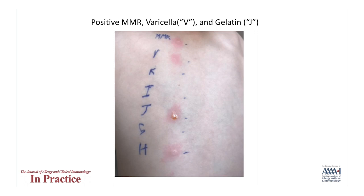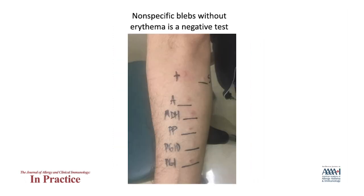Skin testing was positive to gelatin-containing vaccines — MMR and varicella — along with gelatin itself. In this case, testing was placed on the back due to the young age of the child. Non-specific irritated blebs that do not enlarge during intradermal testing can be normal in many patients and are typically not surrounded by erythema. If the saline control is appropriately negative, these should not be interpreted as positive.